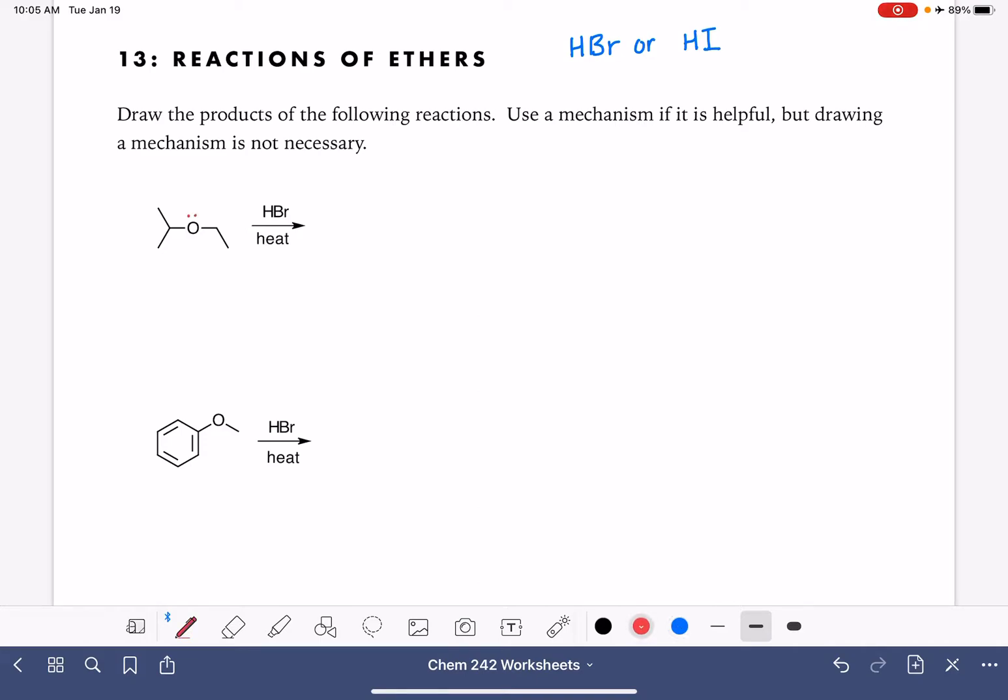Anytime you have an oxygen atom in the presence of a strong acid, and it literally does not matter what type of oxygen you're looking at, whether it's an ether, alcohol, whatever, the very first thing that always happens is the acid protonates the oxygen. So I'm going to begin by drawing the protonation of the oxygen in the ether, just like that.